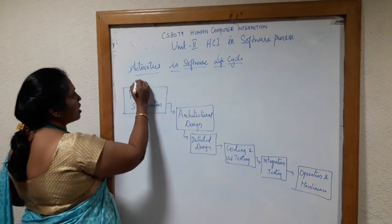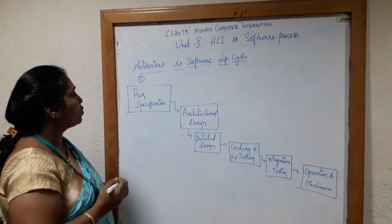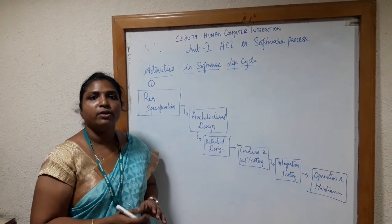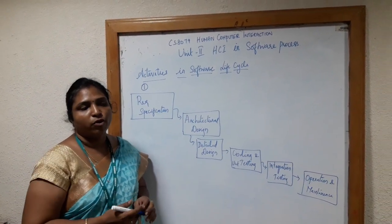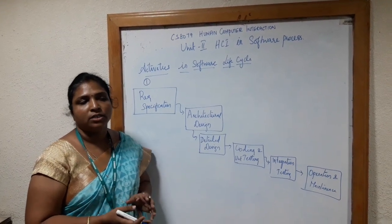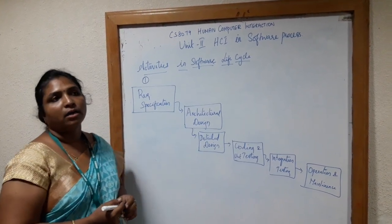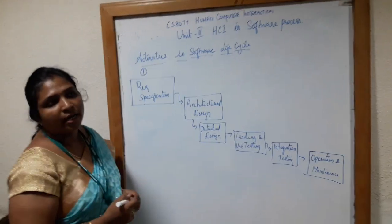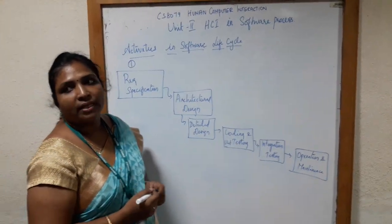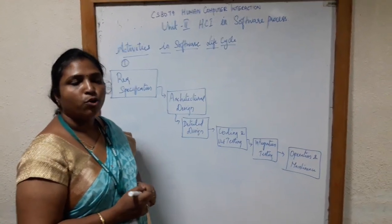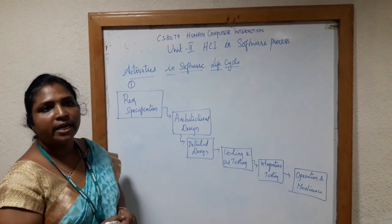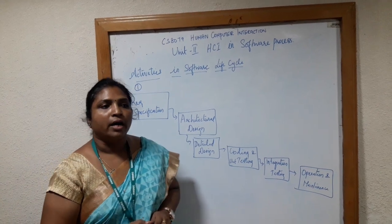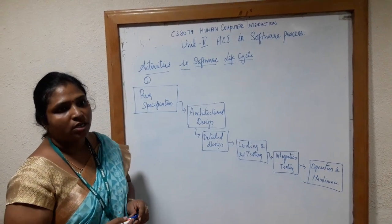Step one is requirement specification. When I say requirements, it includes both functional and non-functional requirements. For example, if you take an ATM system, features like logging in, inserting the ATM card, and then selecting whether we want to deposit money or withdraw money — these are all functional requirements.